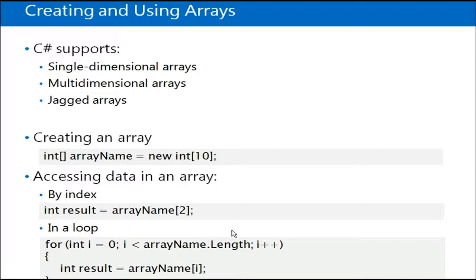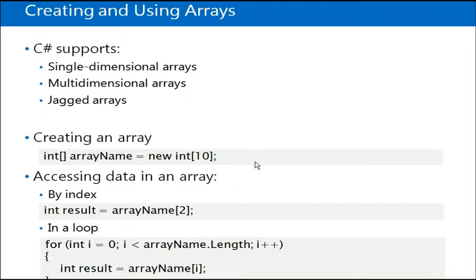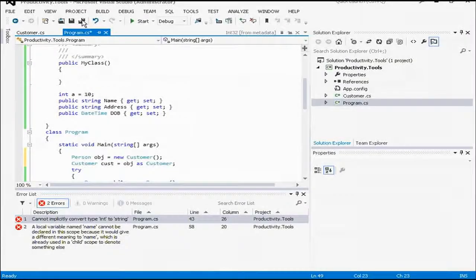We have arrays in C#. How do I create an array? I can create a single-dimensional array, a multi-dimensional array, and a jagged array. Let's see how these things are done.